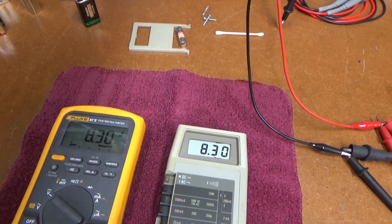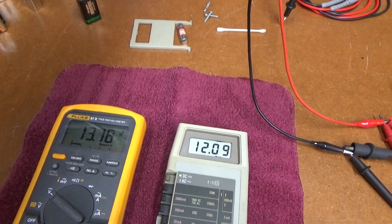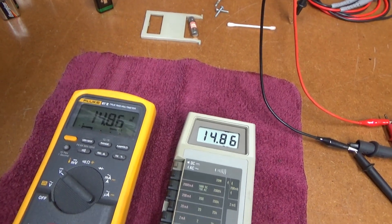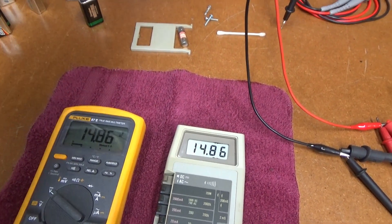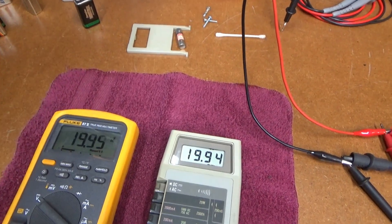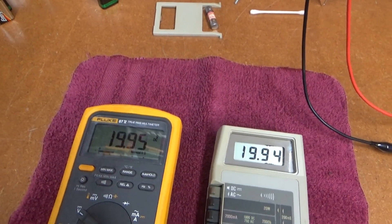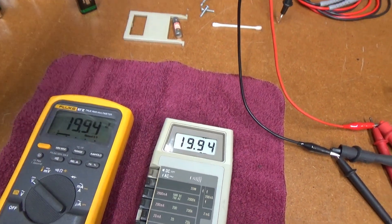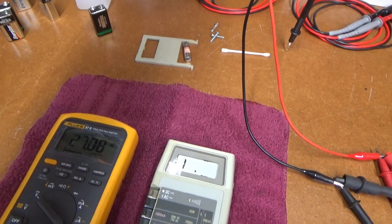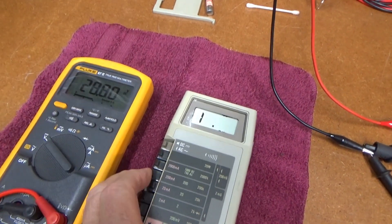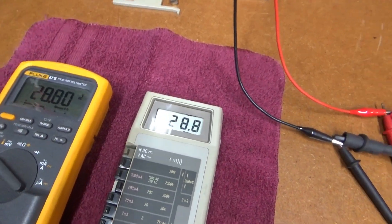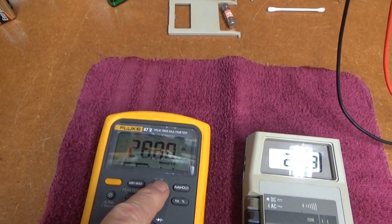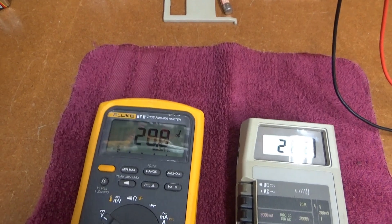About 8 volts, 8.3 on both. 15, 14.86 on both of them. 20, 19.94, 19.945, back and forth. 20, 19.95. Go on a little bit up to like 30. 29.8 on both.